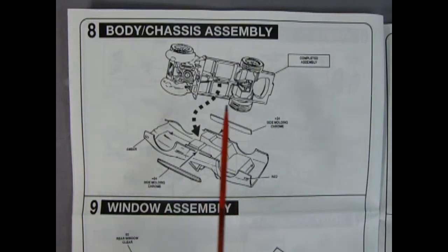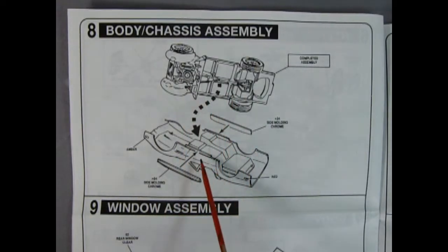Assembly 8 shows our chassis complete that just pops in onto our body from underneath and then you add on these nice chrome side moldings.